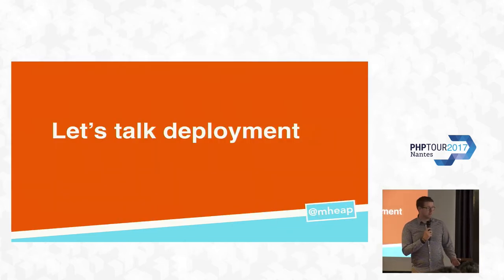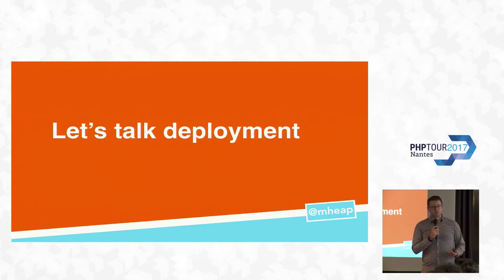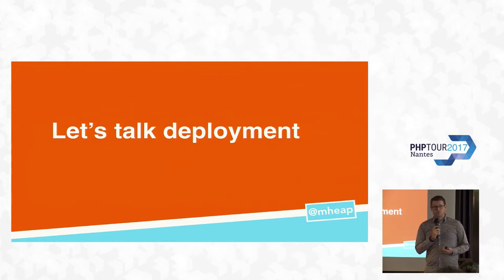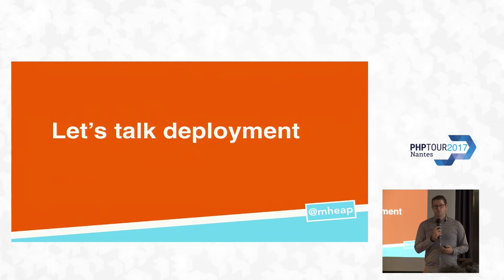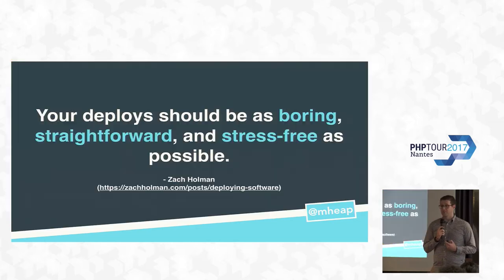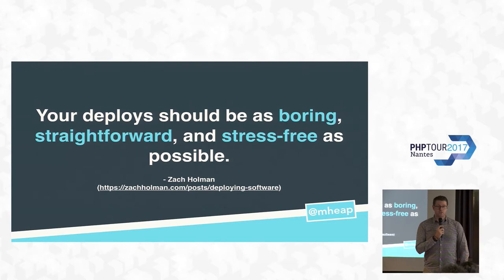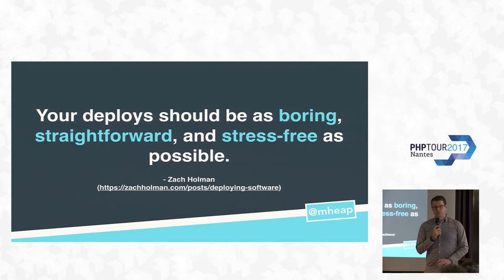You're here because you want to talk about deployment. As developers, we can write the most amazing code in the world, but until it's shipped, it doesn't exist for our customers. Deployment tends to be a mixture of excitement — because customers are going to see what we wrote — and stress, because what if it breaks? There is a way through this. If you take one thing away from this talk, make it this: from Zach Holman, an early hire at GitHub — your deploys should be as boring, straightforward, and stress-free as possible.